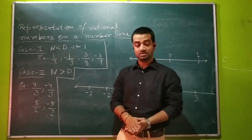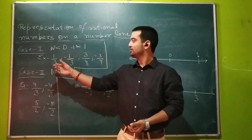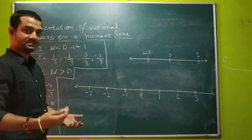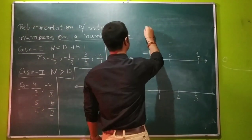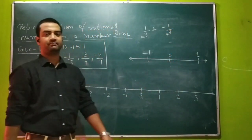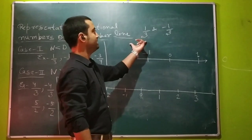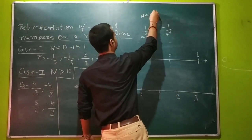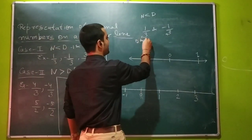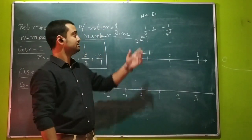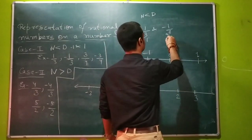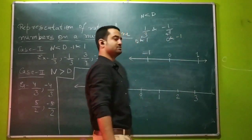Let's have a look at the first example. Suppose we have to draw 1 by 3 on a number line — let's take minus 1 upon 3 also. We have to draw 1 by 3 and minus 1 by 3 on this number line. As I told you, if the numerator is less than the denominator and the number is positive, it will be between 0 and 1. If the number is negative, then it will be between 0 and minus 1.